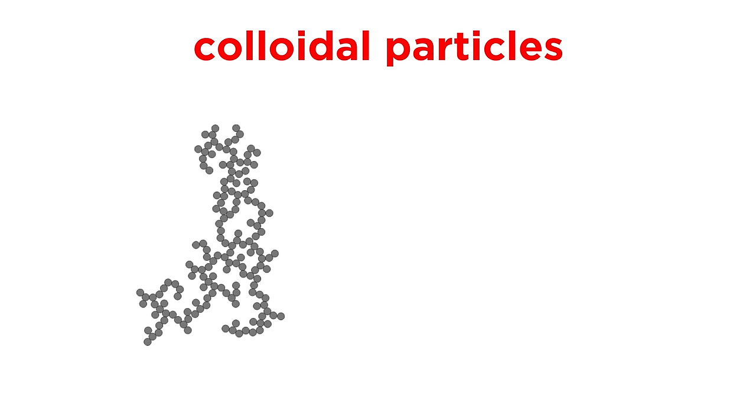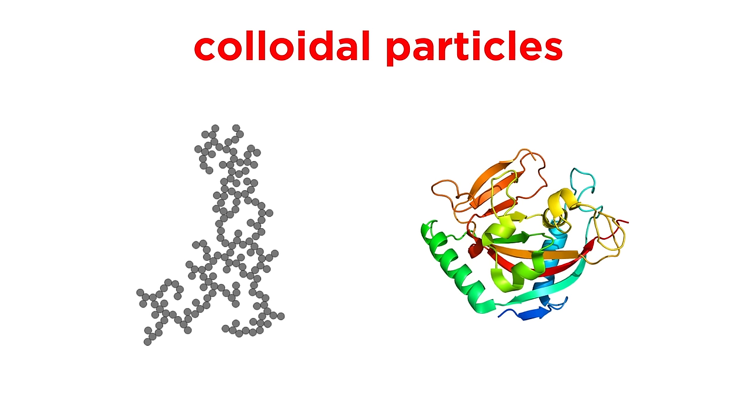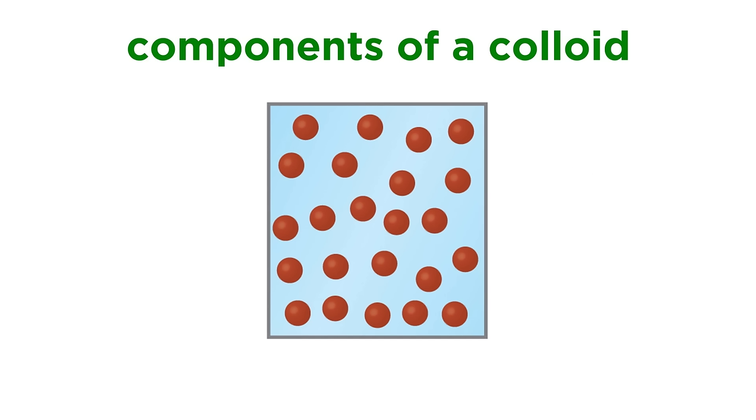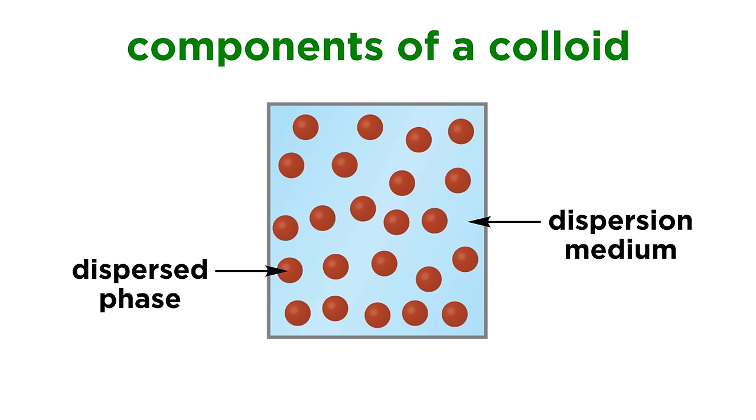Some colloidal particles consist of hundreds or thousands of molecules, but some are just one large molecule, like a protein. And when we discuss colloids, instead of solute and solvent, we will call the particulate component present in small amounts the dispersed phase, and the substance the particulate is dispersed in will be the dispersion medium.